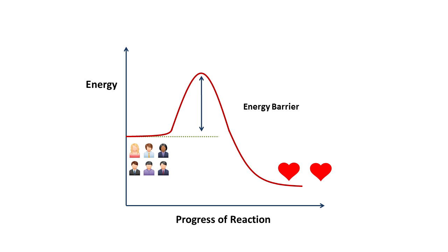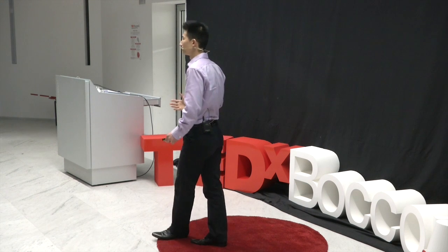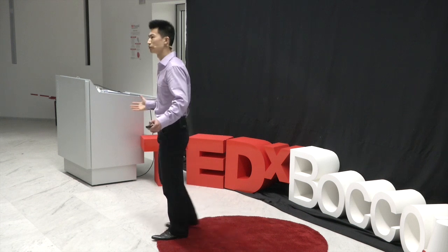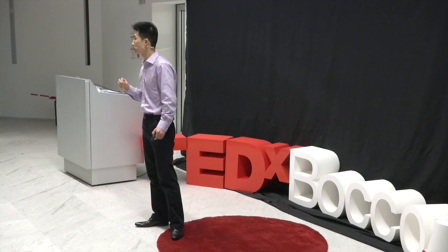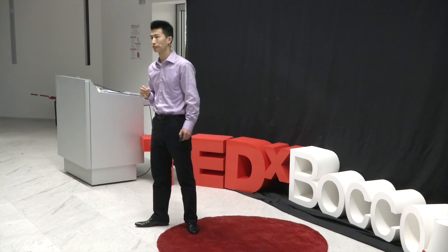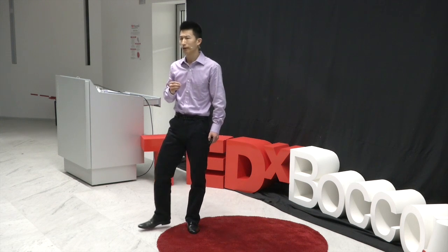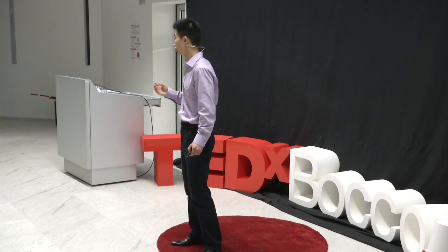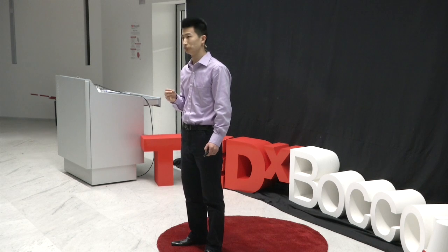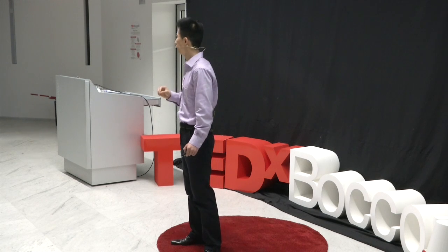And the curve is the same. For a romantic reaction to happen, there is a similar barrier. Anxiety, cultural differences, stereotyping — they could all be part of this barrier. So I attempt to plot a few typical curves, so you know the difference among us.